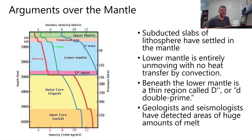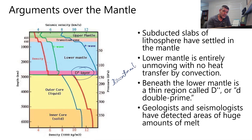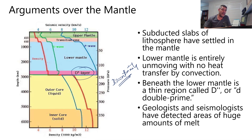Because the mantle is so deep, there have been many arguments about what's happening within it. One interesting concept is the D double prime — another discontinuity in the mantle. Like the MOHO discussed previously, there seems to be a sudden change in seismic wave properties at certain depths, indicating a boundary event — a change in the refractive index or material properties — that causes waves to refract, diffract, or change direction.